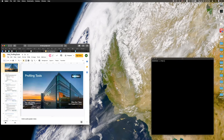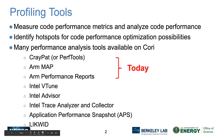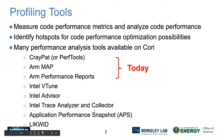Now, this is part two: profiling tools. This is to measure code performance. If you see that your code is running really poorly, you want to see where the code is taking so much time in order to improve performance. On Cori, we have many tools: CrayPat, ARM MAP, ARM Performance Reports, Intel VTune, Intel Advisor, Trace Analysis Collector, etc. I'm going to cover CrayPat and ARM for today.